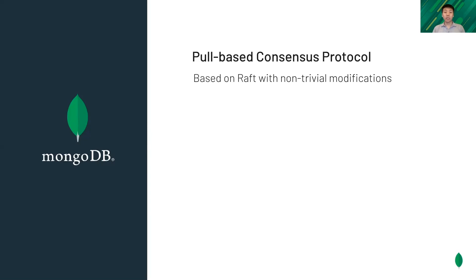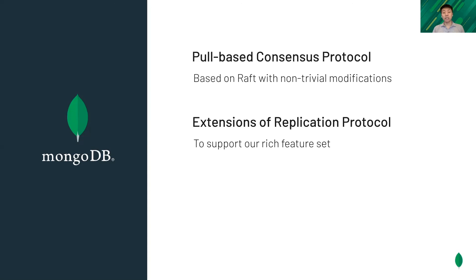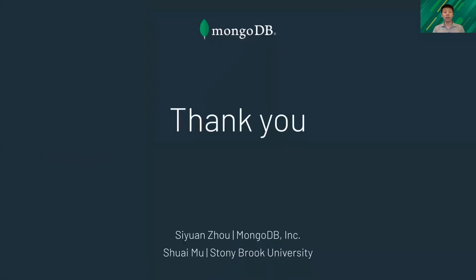In conclusion, MongoDB designed and implemented a pull-based consensus protocol, which is based on Raft but with non-trivial modifications. The pull-based model is valued by our users and allowed us to evolve the replication protocol smoothly. We also extended the replication protocol to support our rich feature set. With all these efforts, we made the replication in MongoDB efficient and reliable. Thank you.